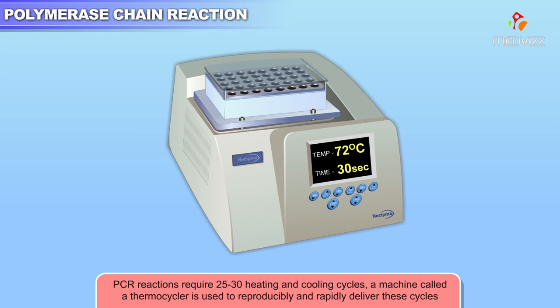Because PCR reactions require 25 to 30 heating and cooling cycles, a machine called a thermocycler is used to reproducibly and rapidly deliver these cycles.